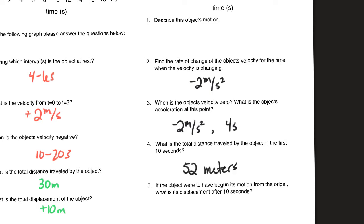Question five asks about displacement. You might see both distance and displacement questions on the velocity graph, because question five can also be determined using motion equations. All you really do is add the two areas together while keeping the negative sign in place: sixteen minus thirty-six equals negative twenty meters. Don't assume the object starts at the origin — I could say it started ten meters away and you'd have to interpret the displacement from there.